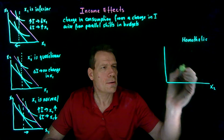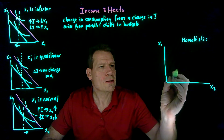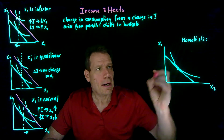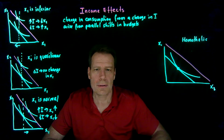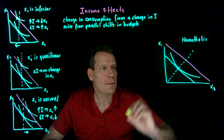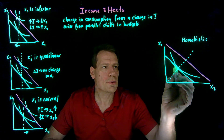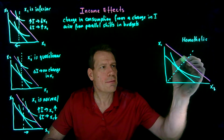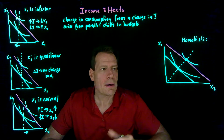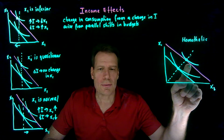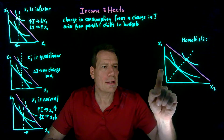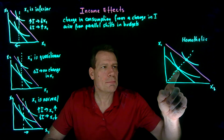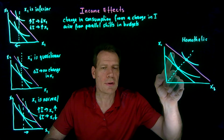Homothetic tastes are tastes where the marginal rate of substitution always stays the same along any ray from the origin. So if we have an optimal bundle here and then the consumer gets a raise, we can draw the ray through the origin. Since we know that the marginal rate of substitution was equal to the slope of the budget here, if that marginal rate of substitution doesn't change along that ray and we haven't changed the slope of the budget, we must have another tangency here. This would be the case where, for a given percentage increase in income, you increase your consumption of x1 and x2 by the same percentage. So if you have a 10% increase in income, you'll increase your consumption of x1 by 10% and your consumption of x2 by 10%.